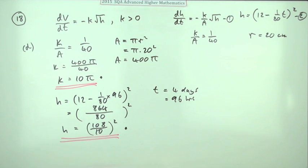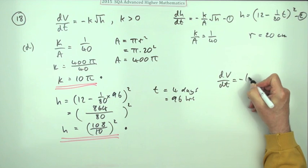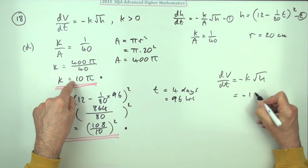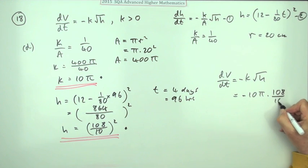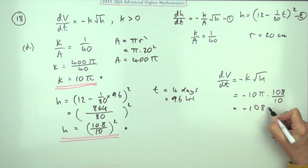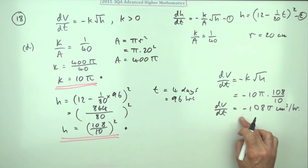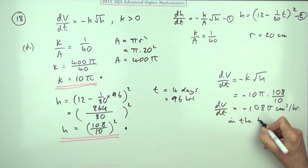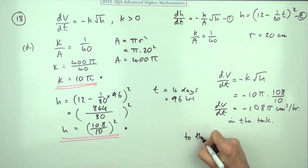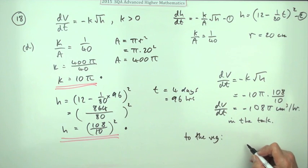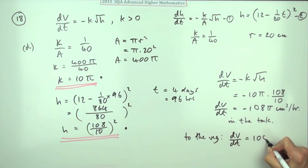All I've got to do is now feed it into this. So finally, well I'll put it over here, dV by dt is negative k root h so it'll be negative 10 pi times the square root of this which is 108 over 10. So that gives you negative 108 pi centimeters cubed per hour for the rate of change of volume in the tank. Which means that to the vegetation, the tank's losing it so it's got a negative rate of change. The vegetation's gaining it so to the vegetation then dV by dt will be positive, so 108 pi centimeters. And that was the last mark and it doesn't mention having that in a decimal equivalent because you tend to leave it, it's exactly what you're saying anyway.